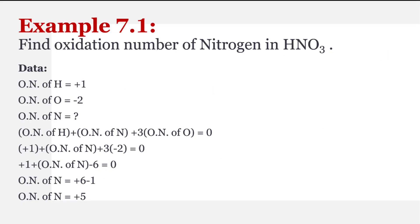Example 7.1: the question is find the oxidation number of nitrogen in HNO3, that is nitric acid. Is mein humne nitrogen ka oxidation number find out karna hai nitric acid mein. To pehle data form karenge — data mein hum likhenge: oxidation number of hydrogen is plus one, oxidation number of oxygen is minus two, and oxidation number of nitrogen humne find out karna hai. Ab isko hum formula ki form mein likhna hai, jaise chemical formula hai usi tarha se.